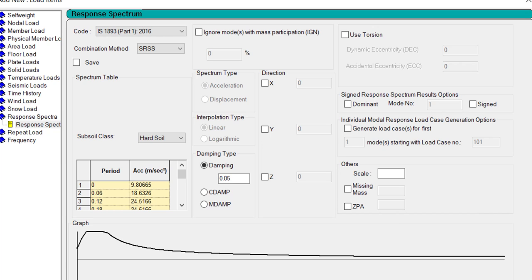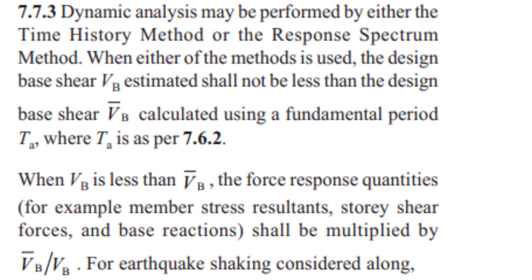There is another doubt that arises in several users who perform dynamic analysis in STAAD. Few users are asking whether they need to use the scale factor to represent the scaling up of the base shear to the response quantities. If I introduce the background of this, in IS 1893 2002 or 2016, there is a mention of the ratio VB/Vb, which is the ratio between the base shear calculated through the static method (equivalent static method) and the base shear calculated through the dynamic analysis.